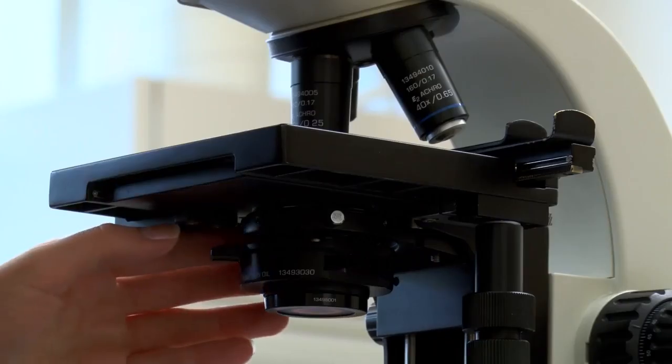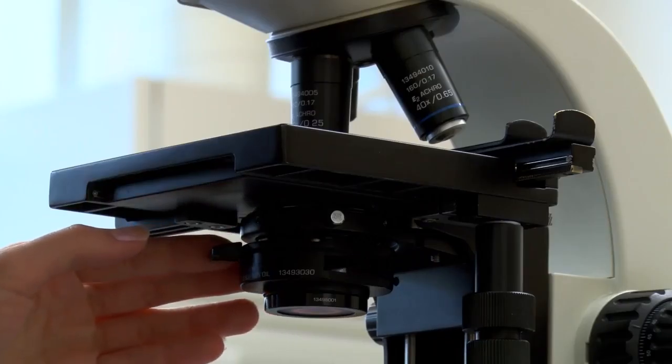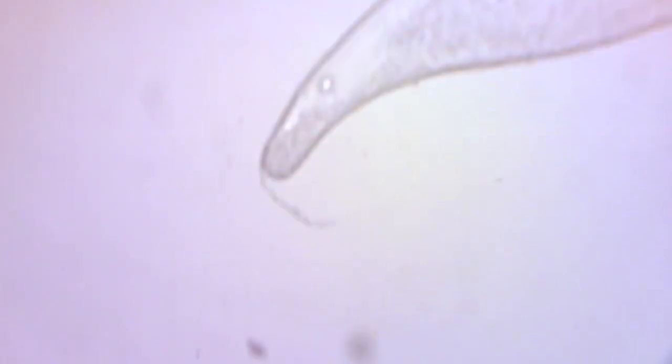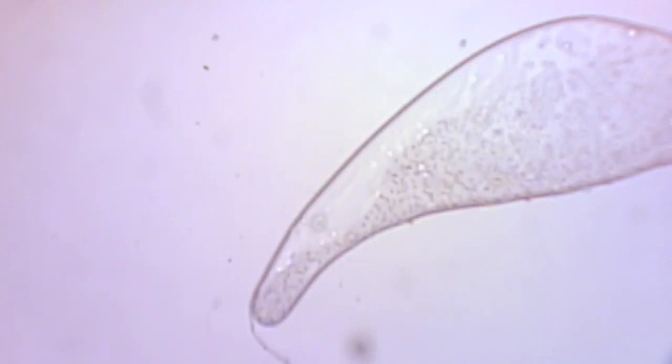If you are observing unstained specimens, use the stage diaphragm to reduce the amount of light passing through. Also, try to find a bubble or other easily observed object under the cover slip and focus on that.